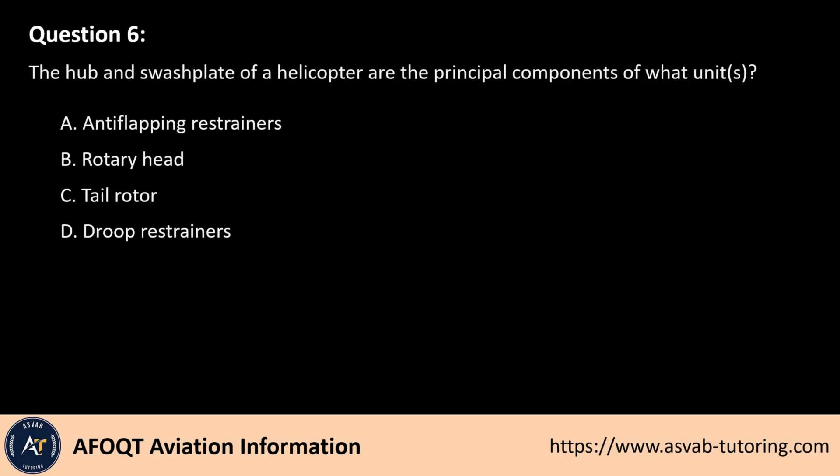Question 6. The hub and swashplate of a helicopter are the principal components of what units? A. Anti-flapping restrainers. B. Rotary head. C. Tail rotor. D. Droop restrainers.